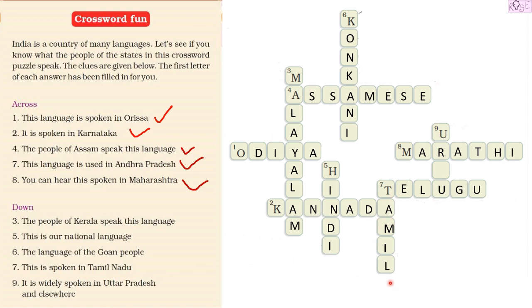Tamil. And the last one — down number nine — it is widely spoken in Uttar Pradesh and elsewhere. We already have U, R from Marathi and Telugu. The language is Urdu, and we just had to write D. That completes our crossword! To recap: Malayalam for Kerala, Hindi as the national language, Konkani for Goa, Tamil for Tamil Nadu, and Urdu for Uttar Pradesh.